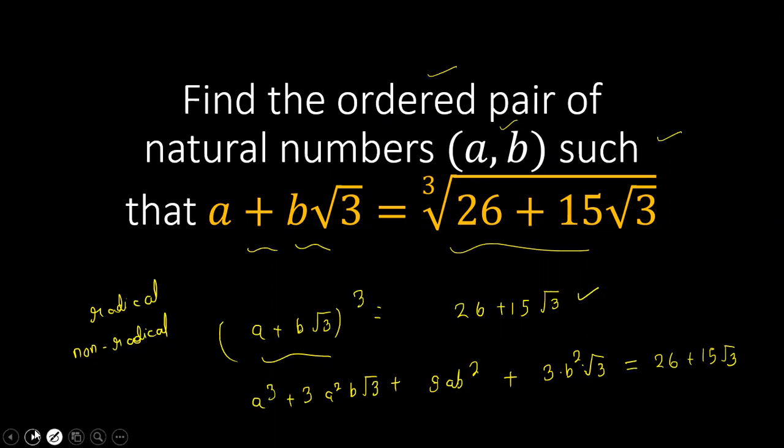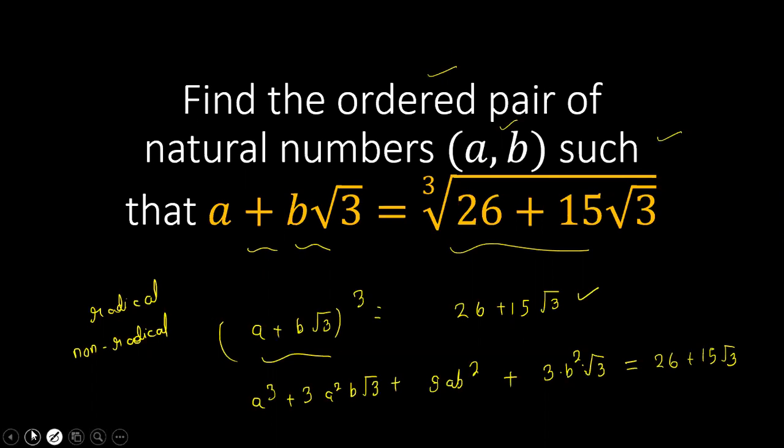So here we have a cubed plus 9ab squared and 3b cubed plus 3a squared b is equal to 15. So this is where I have equated.